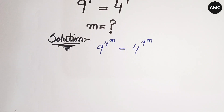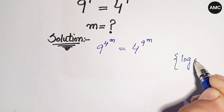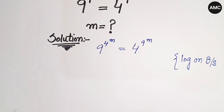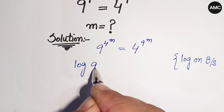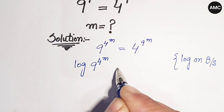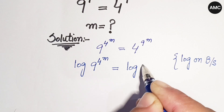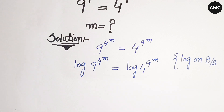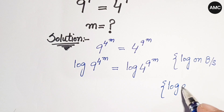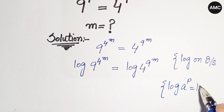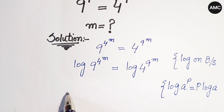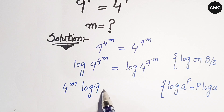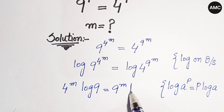If we take log on both sides, we get log of 9 raised to the power 4 to the power m is equal to log of 4 raised to the power 9 to the power m. According to the logarithm rule, log a to the power p equals p log a. So our left hand side becomes 4 to the power m times log 9, and the right hand side is 9 to the power m times log 4.